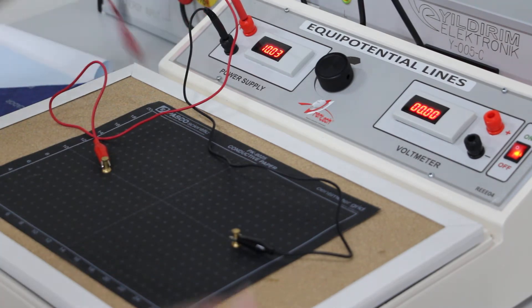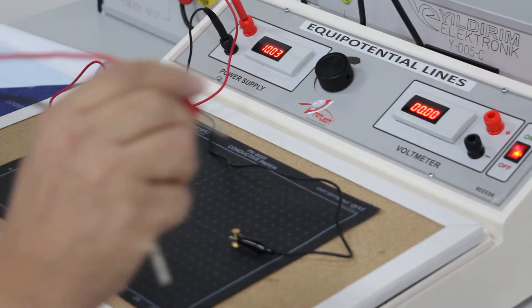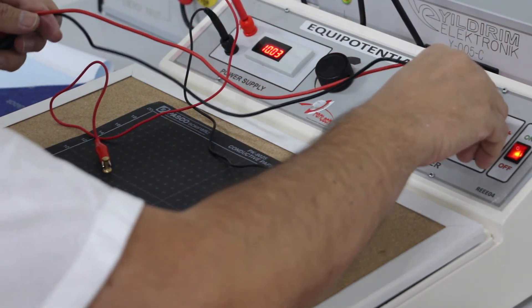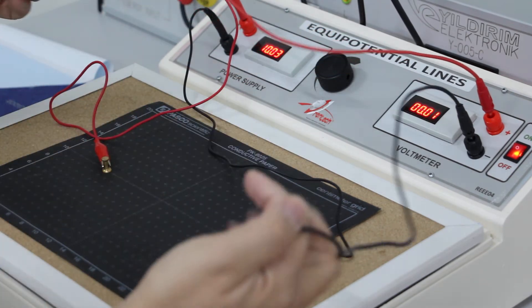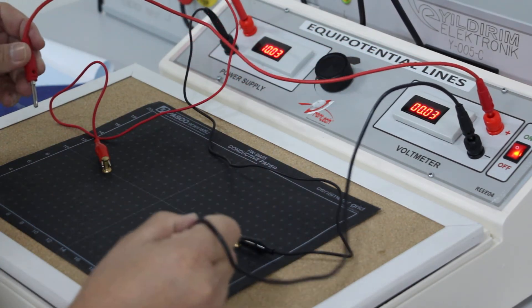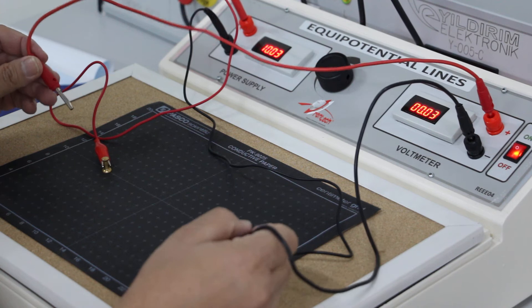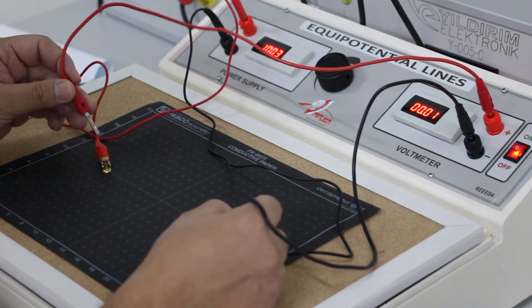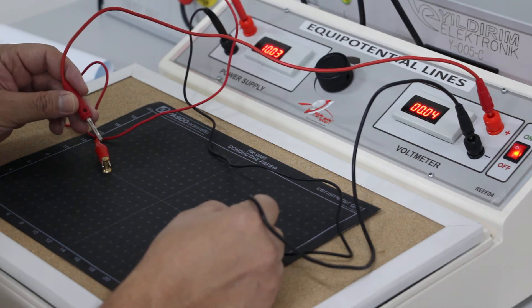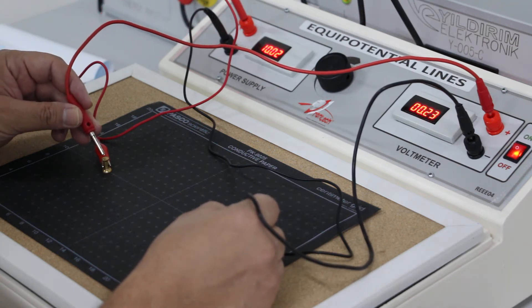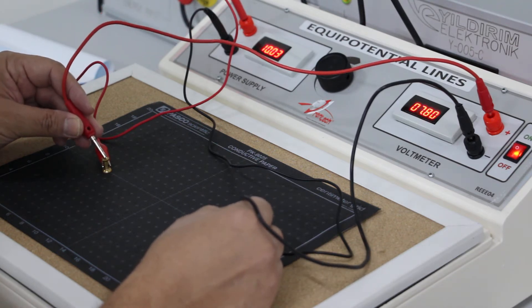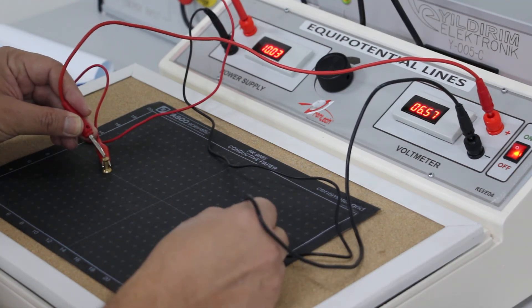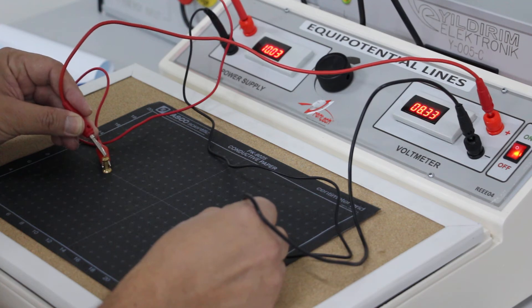Now I put my voltmeter cables and I start to measure the voltage difference between two potentials. We see that there is a potential difference between two points. We see that there are 10 volts between them.